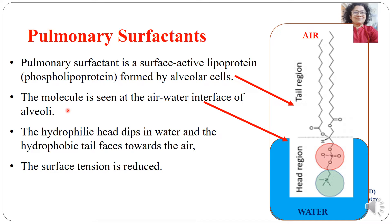The molecule is seen at the air-water interface of the alveoli. The surface tension is reduced due to the presence of these lung surfactant molecules, and because of this reduction in surface tension, the lung is able to carry out its function properly.